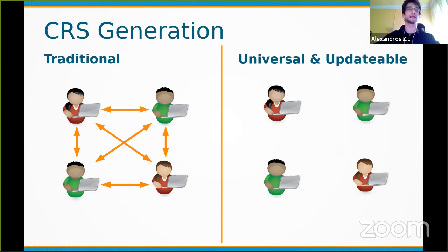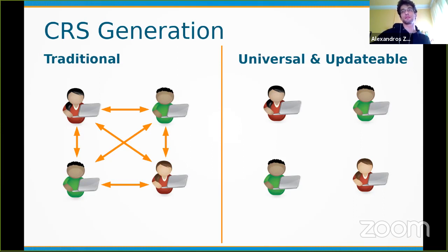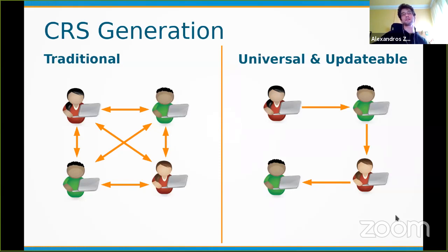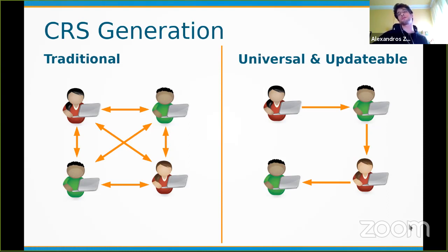The traditional MPC setup process is expensive and must be run separately for every language. At Crypto 2018, an alternative — the universal and updatable model — was presented, where each party takes a previous CRS and creates a new one with a proof that prior randomness is accounted for. This is much easier to instantiate and is universal, requiring only one setup to handle any circuit of bounded size.